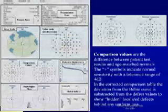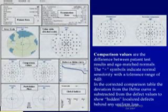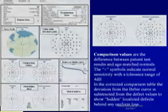In the corrected comparison table, the deviation from the Bede curve is subtracted from the defect values to show hidden localized defects behind a uniform loss.